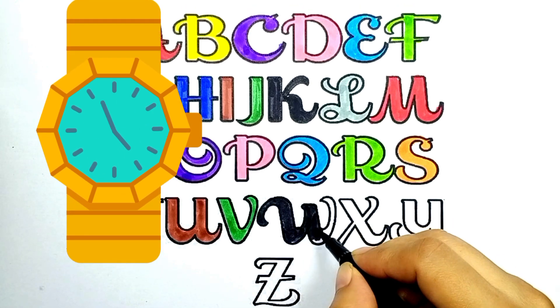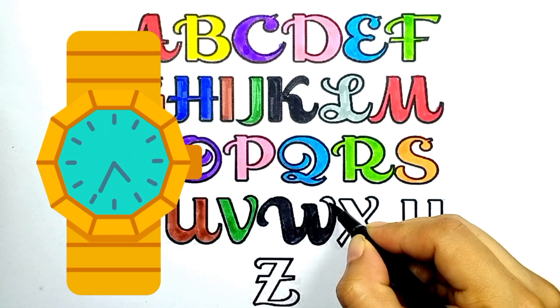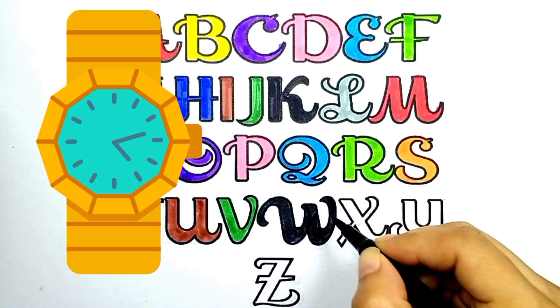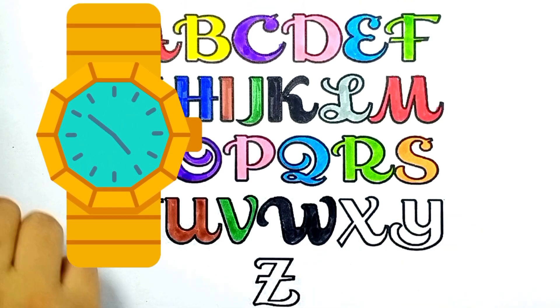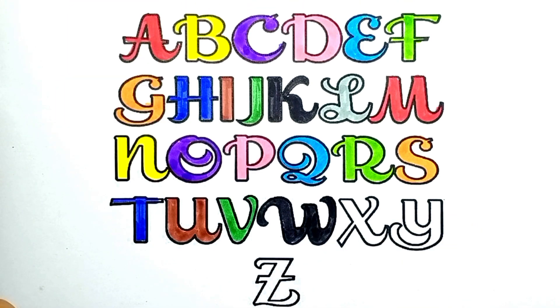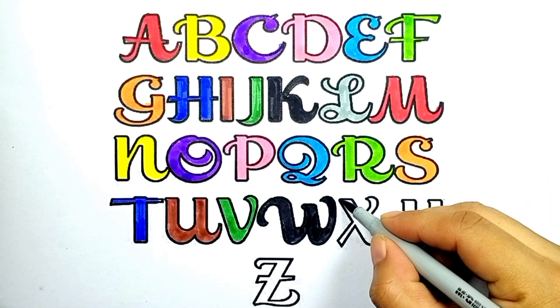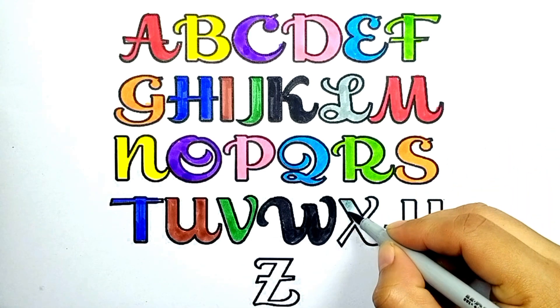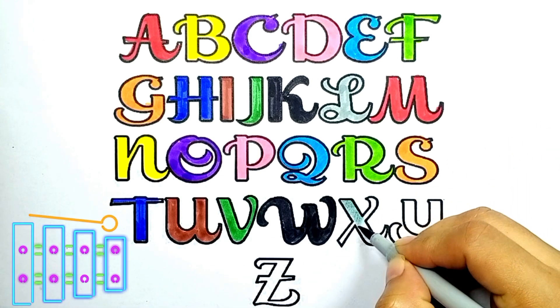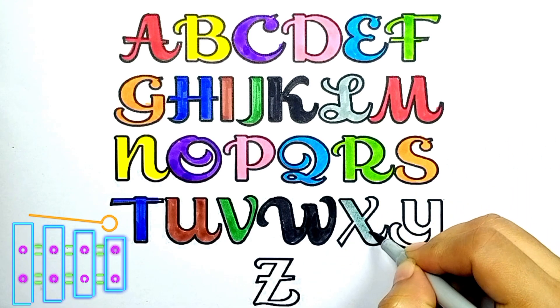Now I know my ABCs. Next time won't you sing with me. Gray color, X. X for Xylophone.